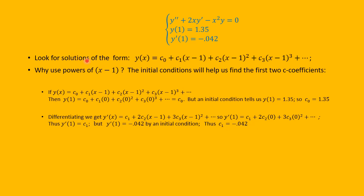We're going to look for solutions of the form y(x) = c₀ + c₁(x−1) + c₂(x−1)² + ..., where all terms have powers of x minus 1. Why would we use powers of x minus 1? It actually helps us: the initial conditions will let us find c₀ and c₁ almost immediately.